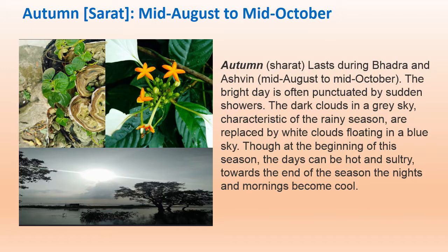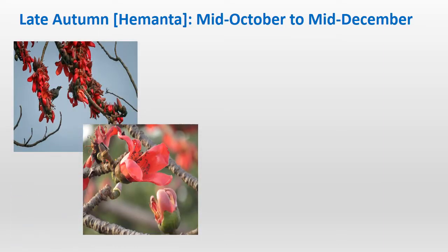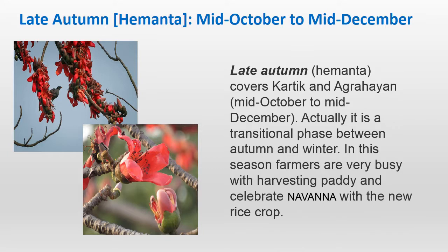Sharath is relatively much better than the rainy season, as people start to come together again after the devastation. Then we have late autumn, called Hemanta in Bangla, which starts from mid-October and continues up to mid-December. This is a very interesting and colorful season with flowers coming up, and it is more or less dry but a little cold — the beginning of cold weather.